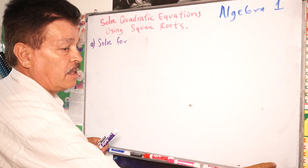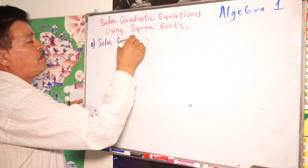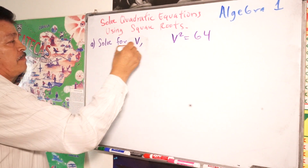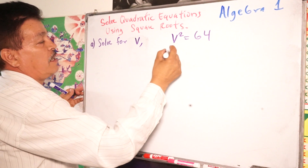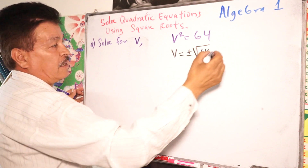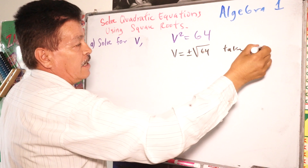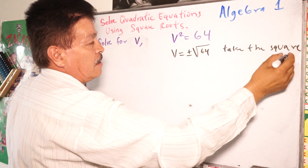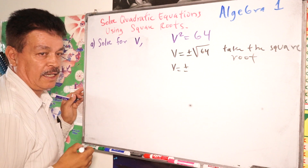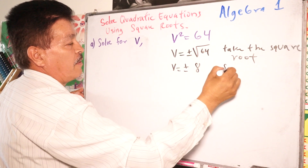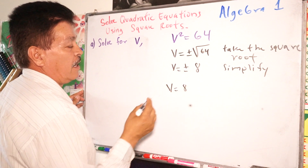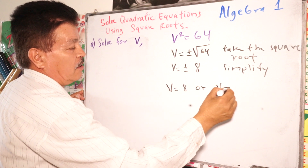Let's try another example. Solve for b, where b squared equals 64. The next step: take the square root of both sides, so b equals positive or negative square root of 64. Simplifying, the square root of 64 is 8, so b equals 8 or b equals negative 8.